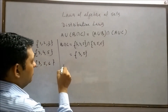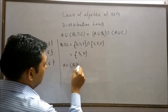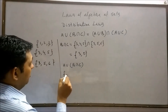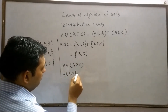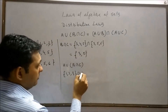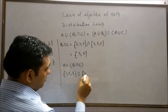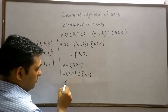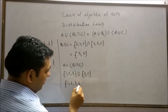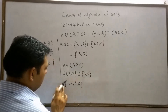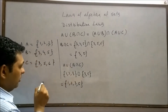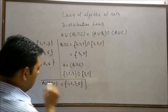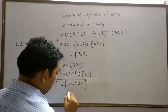Now take A union (B intersection C). Set A is {1, 2, 3} and B intersection C is {3, 5}. Combining these sets, we get {1, 2, 3, 5}. Therefore, A union (B intersection C) = {1, 2, 3, 5}. Let this be our first result.